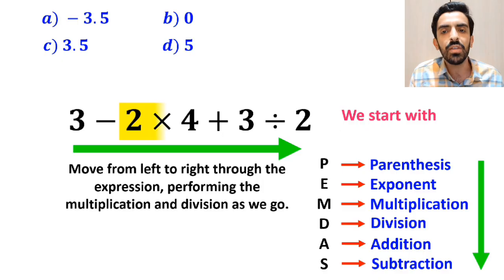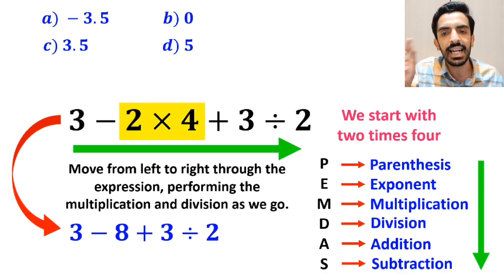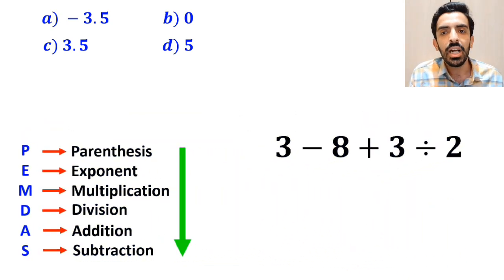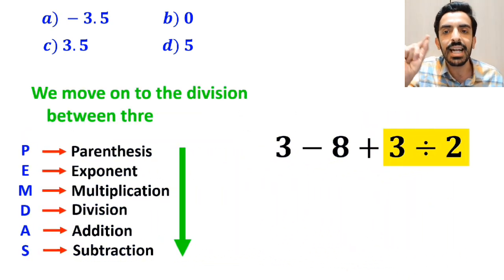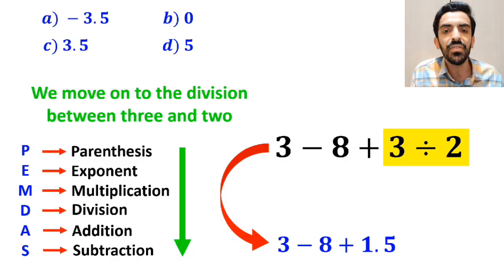So, first we start with 2 times 4, and write this expression as 3 minus 8 plus 3 divided by 2. In the next step, we move on to the division between 3 and 2, and replace this expression with 3 minus 8 plus 1.5.